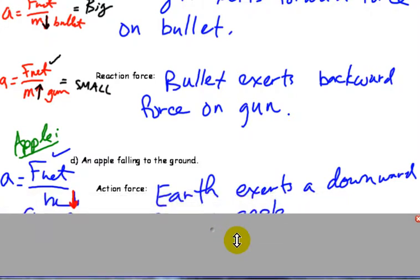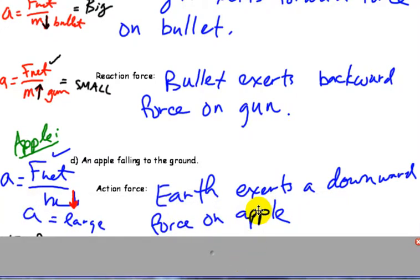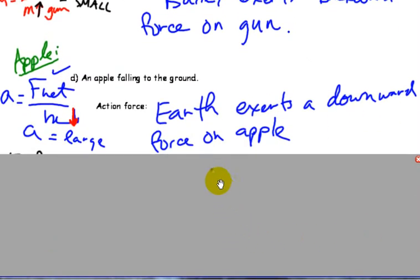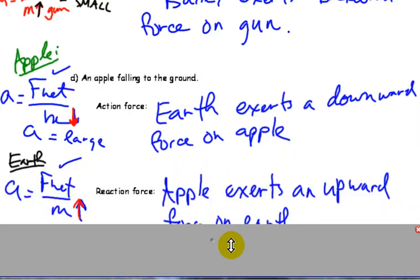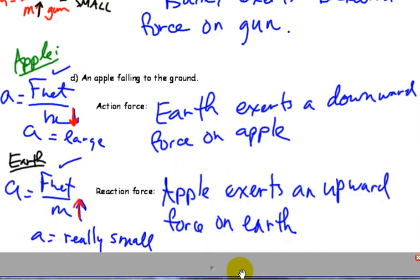Apple falling to the ground. This is an interesting one. So if you just look at Apple and Earth, Earth exerts downward force on Apple. And here's where it gets crazy: Apple exerts upward force on Earth, believe it or not. All objects exert a force inwards towards themselves, being that gravity.